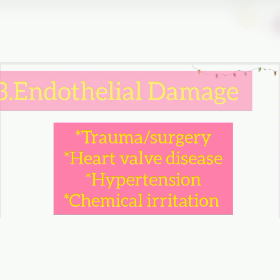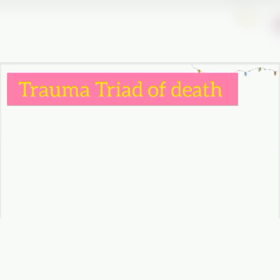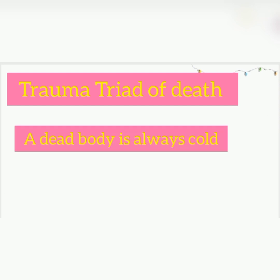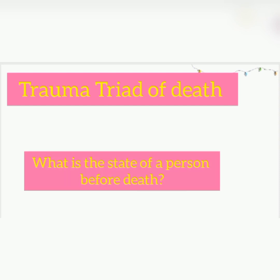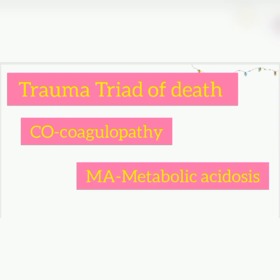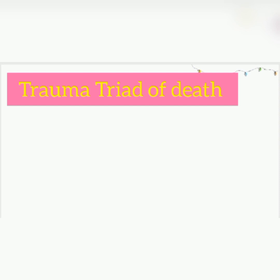Now that we know what Virchow's triad is, let's move on to the trauma triad of death. Hypothermia, coagulopathy, and metabolic acidosis form the trauma triad of death. To remember this triad: a dead body is always cold, so that gives us hypothermia. Then we ask what state a person is in before they die — often comatose. So let the 'co' in coma stand for coagulopathy, and the 'ma' stand for metabolic acidosis. This way we can easily remember it.